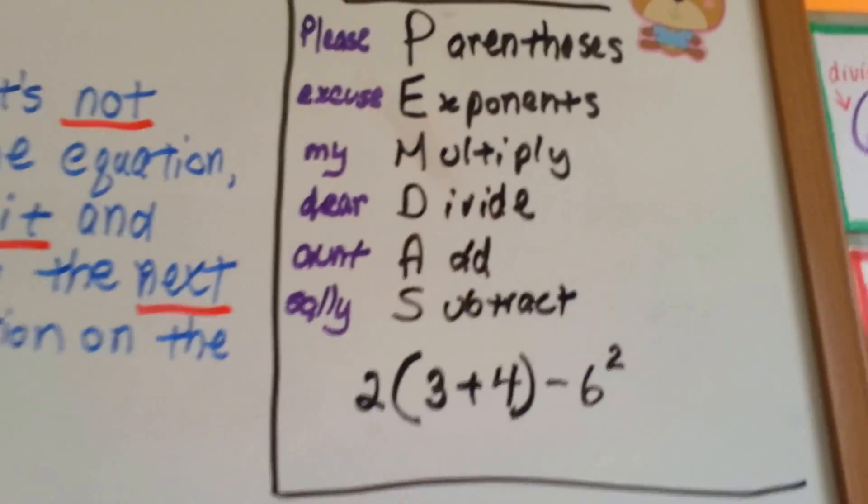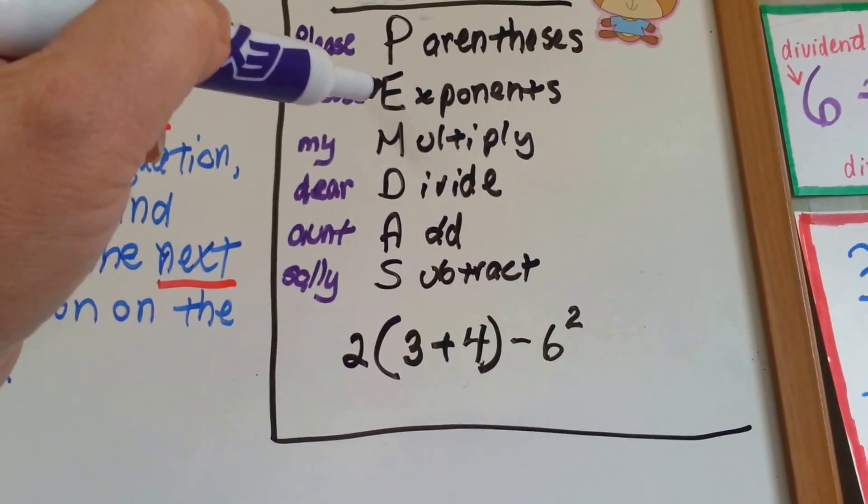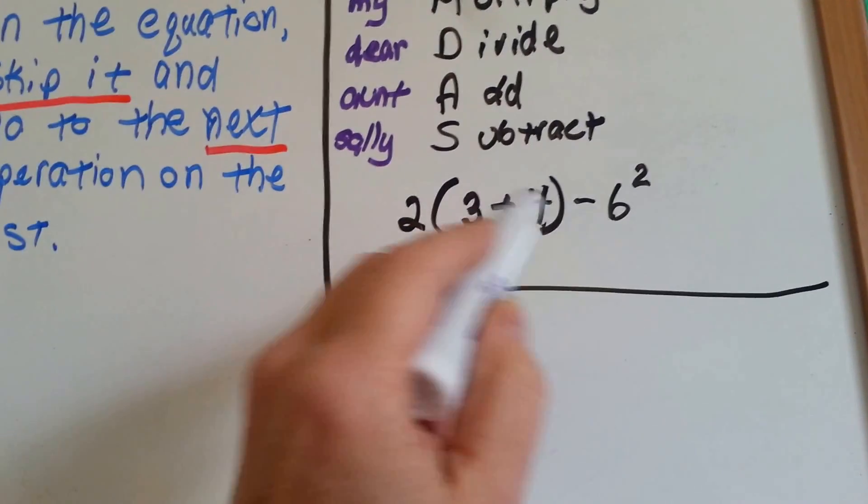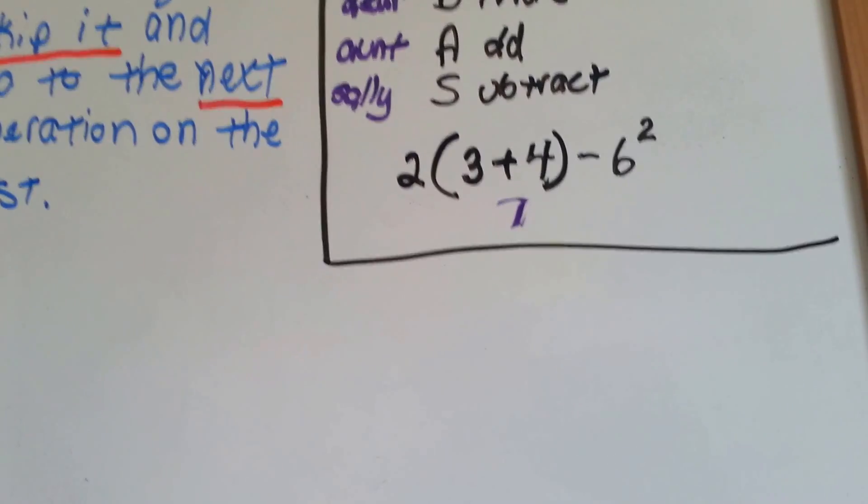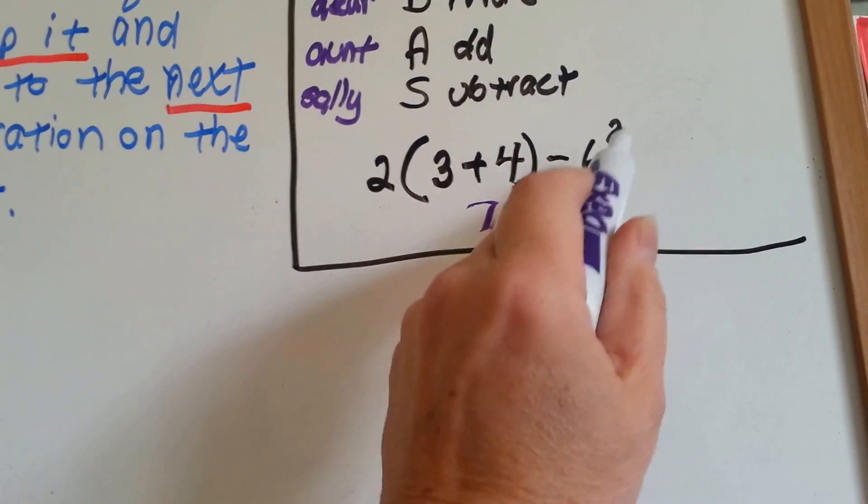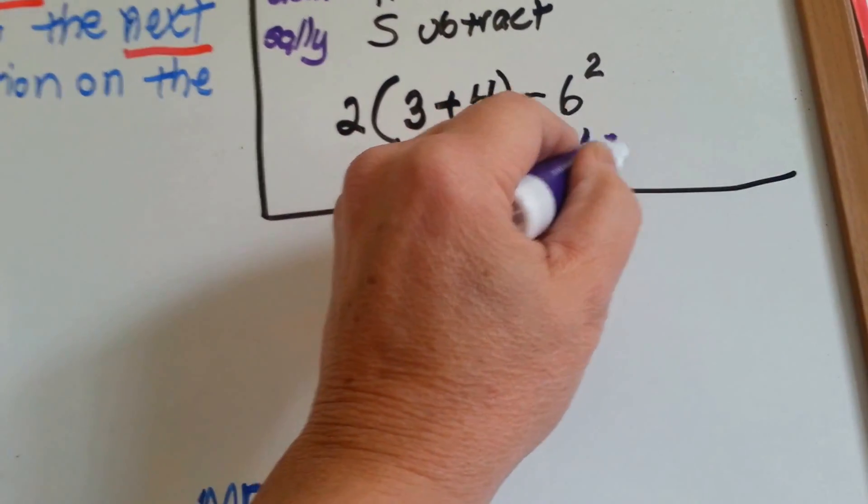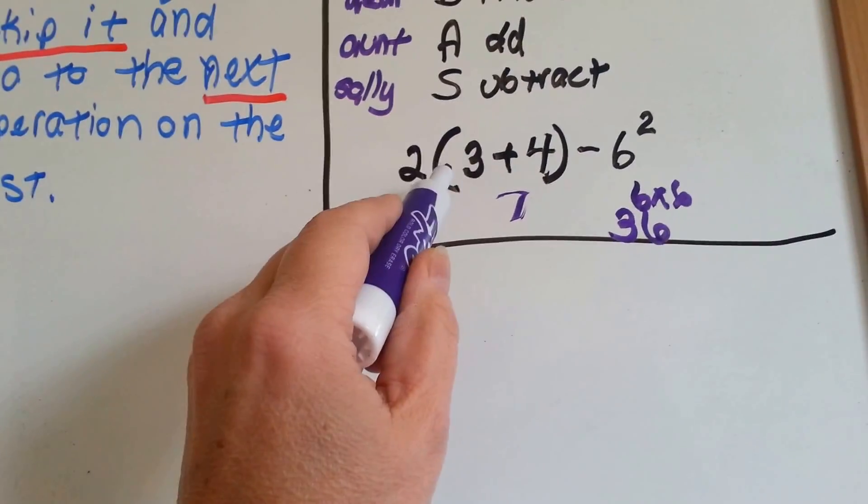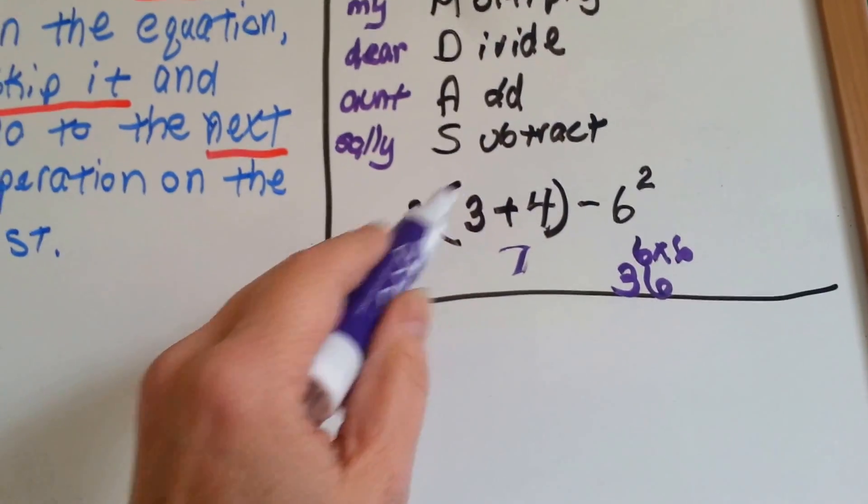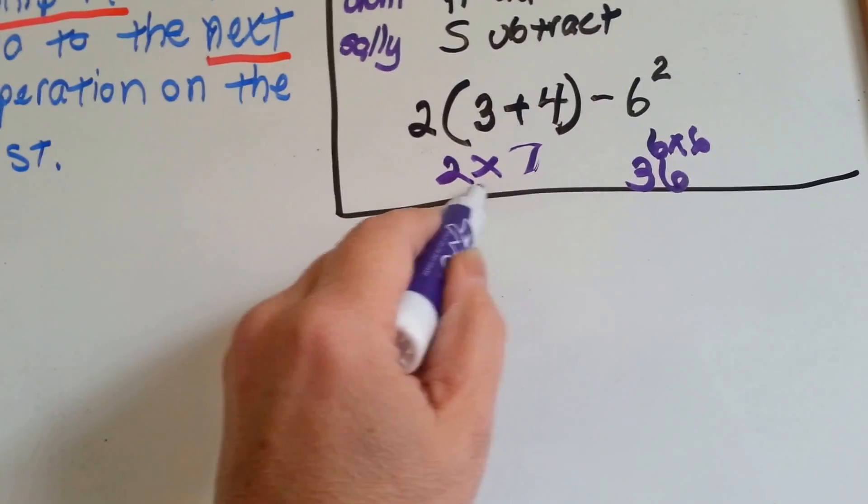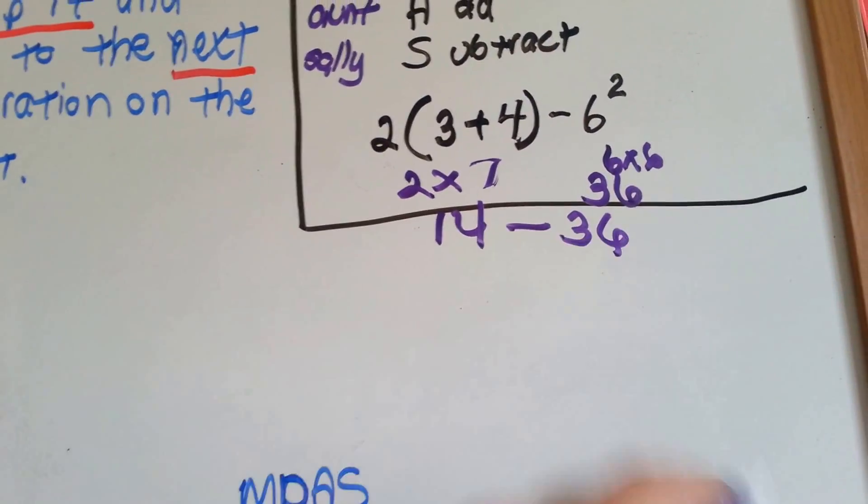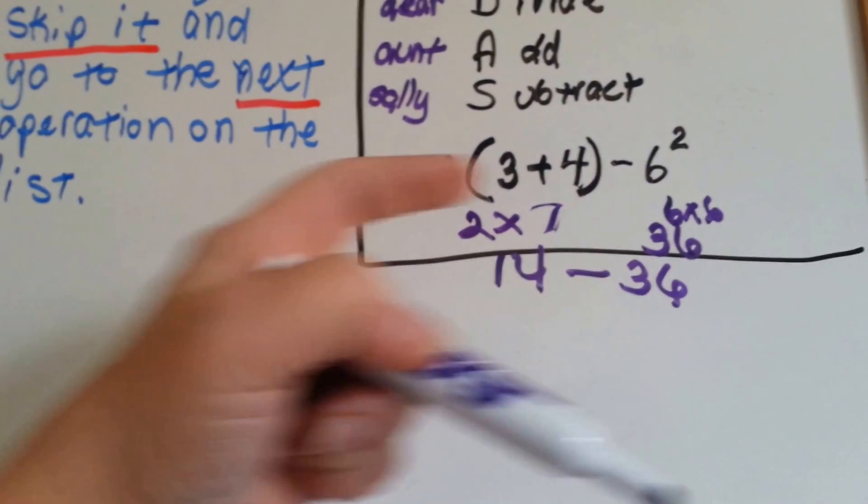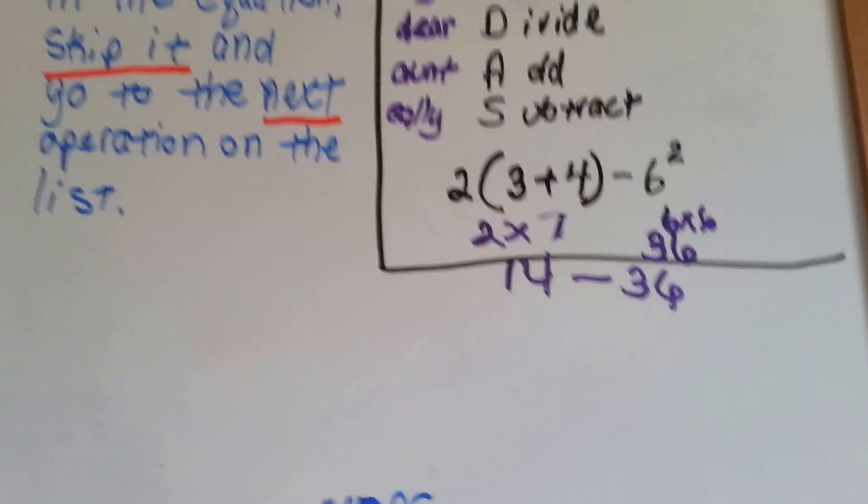In the 5th grade version, it says you do parentheses first, then the exponent, which is this little guy up here, then you multiply, divide, add, or subtract. So, parentheses first, we would do 3 plus 4, which is 7. Then we would do the exponent over here. 6 squared means 6 times 6. 6 times 6 is 36. When a 2 is next to a parentheses like that, that means to multiply. So, now we're going to multiply. So, we've got 2 times 7, which is 14, minus 36. Do you see how that happened? Now, if we didn't do order of operations and we just went straight across, we would come up with a complete different equation.